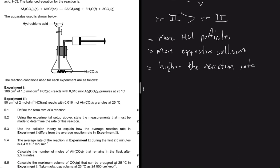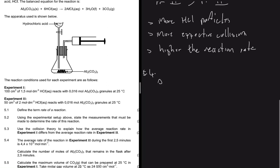Question 5.4: the average rate of the reaction in experiment two during the first 2.5 minutes is 4.4 × 10⁻³ mol/min. So we have delta T = 2.5 minutes, and the average rate of reaction = 4.4 × 10⁻³ mol/min.